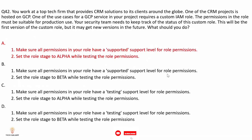Option C: use a testing support level and set the role stage to alpha. Using a testing support level may not provide the necessary confidence in stability and suitability for production use, and setting the stage to alpha does not guarantee a supported support level. Option D: use a testing support level and set the stage to beta — again, testing-level permissions are not fully supported for custom roles and are not fit for production. The correct answer remains option A.